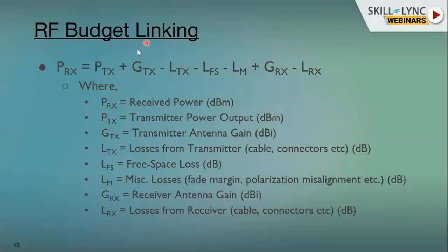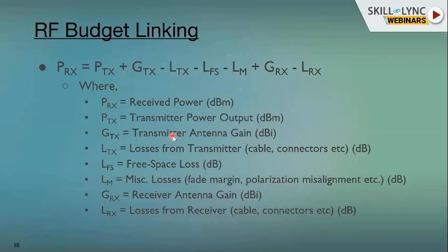As mentioned, the Friis equation tells us about the different losses included when you design a complete system. This section covers received power — what's involved includes the transmitter power and the transmitter antenna gain. You have to choose the antenna precisely, because a wideband antenna may not have good gain at higher frequencies, so we need to check how the antenna gain looks across frequency.